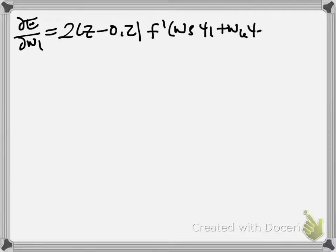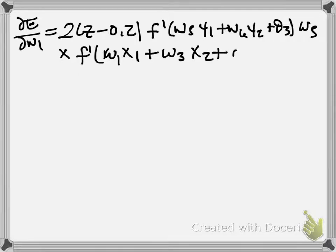I'm going to do that on this page. We get dE/dW1 equals 2 times Z minus 0.2, times F prime of W5Y1 plus W6Y2 plus theta3 times W5 times F prime of W1X1 plus W3X2 plus theta1 times X1.